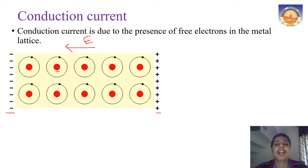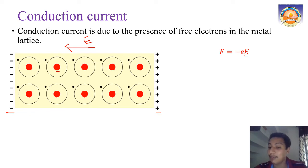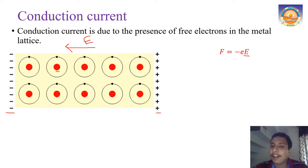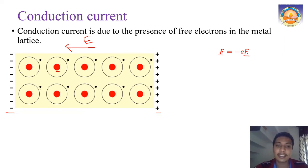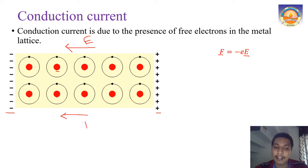Because of the electric field, charges experience a force. The charge of one electron is e equals 1.6 times 10^-19 coulombs. The force on a single electron is F equals minus eE. This same force acts on all electrons, causing the drift. The electrons move from left to right, but by convention, the conventional current flows in the opposite direction - from right to left.